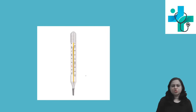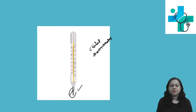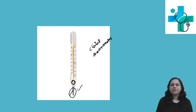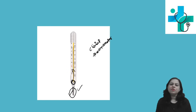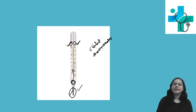This is the instrument named clinical thermometer. See the tip — there is mercury and this is the column. See the kinking here; there is a small kinking which will prevent the mercury from falling down. Whenever you measure body temperature and mercury level goes up, because of this kinking, it prevents the falling of the mercury. See the markings on both sides — one is in degree Celsius and the other is in degree Fahrenheit.